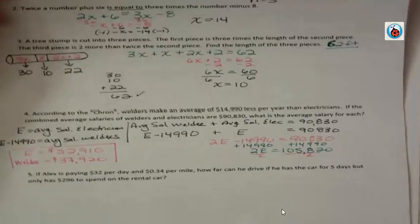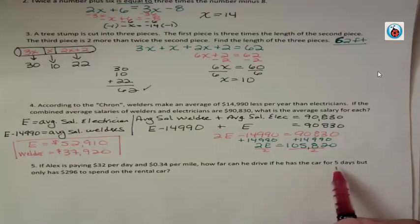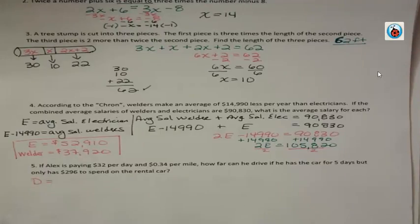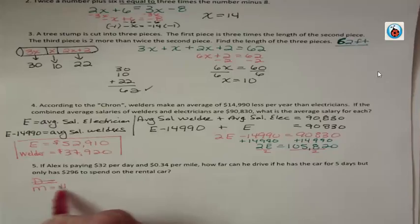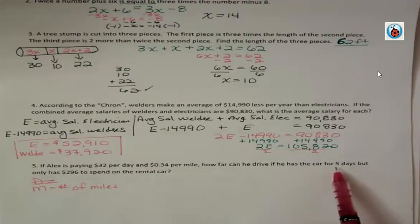A little different type of problem. If Alex is paying $32 per day and $0.34 per mile, how far can he drive if he has the car for 5 days but only has $296 to spend on the rental car? We're going to forget about taxes and all those weird little fees for the GPS and the car seat. We're just talking about what we have here, $32 a day and $0.34 per mile. I'm going to call M equals number of miles. How far can he drive? That's what we're interested in. First of all, let's figure out what it cost him to have the car for 5 days.